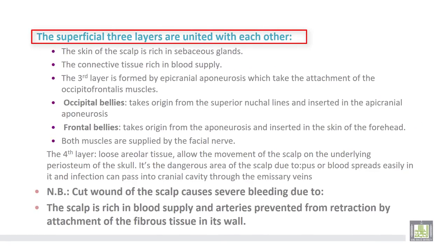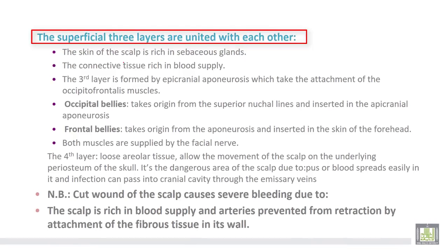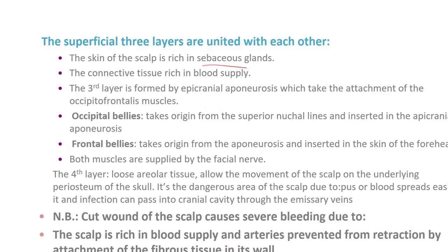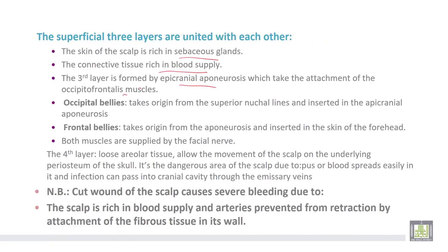The superficial three layers are united with each other. The skin of the scalp is rich in sebaceous glands. The connective tissue is rich in blood supply. The third layer is formed by the epicranial aponeurosis, which takes the attachment of the occipitofrontalis muscles. The occipital belly of the occipitofrontalis muscle takes origin from the superior nuchal lines of the skull and is inserted into the epicranial aponeurosis. The frontal belly takes origin from the aponeurosis and is inserted into the skin of the forehead. Both muscles are supplied by the facial nerve. The fourth layer is formed by loose irregular tissue, which allows movements of the scalp on the underlying periosteum.